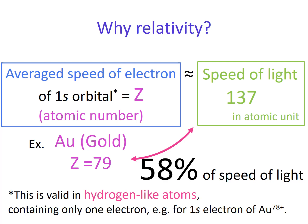So in the case of gold, Z is 79, the speed of one s electron is almost 60% of the speed of light. Note that it is only valid for the hydrogen-like atoms which contain only one electron. In the case of gold, it is Au 78+, a highly charged cationic atom. But now you are certainly aware that we should think relativity for heavy element systems.